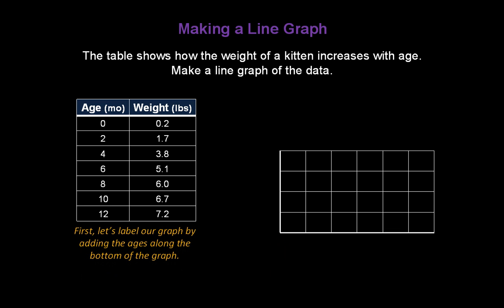First, let's go ahead and start labeling our graph by adding the ages along the bottom of the graph. They go in two month increments from zero all the way to twelve months. Don't forget to add a title for that axis. It's the age of the kitten in months.